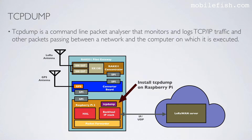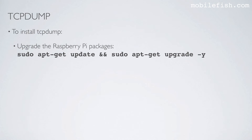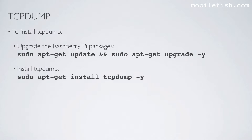TCPdump is a command-line packet analyzer that monitors and logs TCP/IP traffic and other packets passing between a network and the computer on which it is executed. In this example, TCPdump will be installed on the Raspberry Pi. To install TCPdump, first upgrade the Raspberry Pi packages by entering the upgrade command, then install TCPdump using the install command.